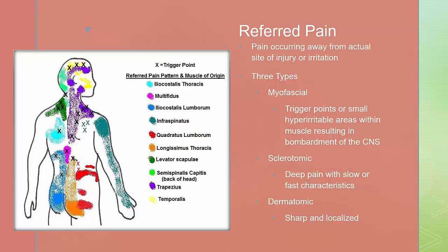Referred pain occurs away from the actual site of injury or irritation. Referred pain may elicit motor and/or sensory responses. There are three types of referred pain: myofascial, sclerotomic, and dermatomal. Myofascial pain appears as trigger points — small, hyper-irritable areas within muscle — resulting in a bombardment of the central nervous system, from both acute and chronic pain. Sclerotomic pain causes deep aching and poorly localized pain; it can be projected to multiple areas of the brain causing depression, anxiety, fear, or even anger. Dermatomal pain is typically sharp and localized and follows dermatome pathways.